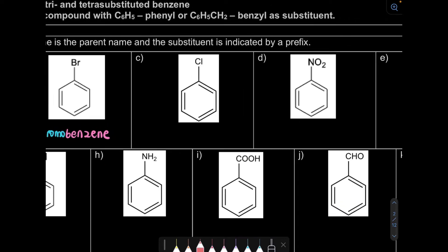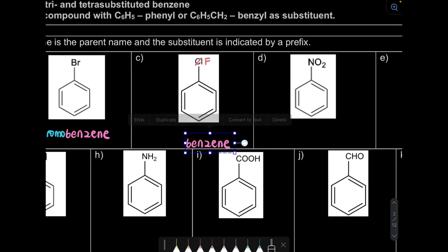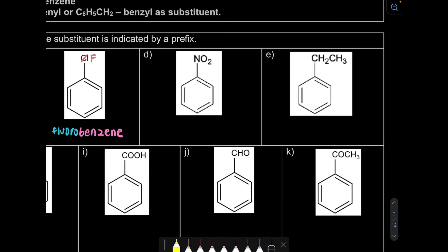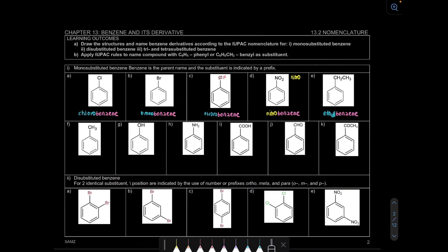For question C, the substituent is fluorine, so the name would be fluorobenzene. For question D, we have NO2 — this is nitro — so the name becomes nitrobenzene. For question E, we have two carbons, so that means we have ethyl. So the name becomes ethylbenzene.